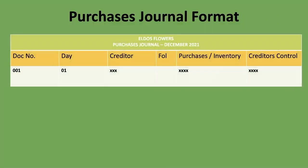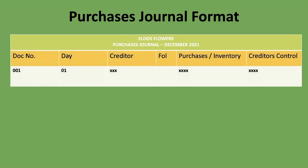Let's look at the format for the purchases journal. We start with the name of the company or entity for which we are creating the journal — here we have the example 'Aldo's Flowers'. Then we write the name of the journal, here written as 'Purchases Journal', and very importantly the period — in this example, December 2021.